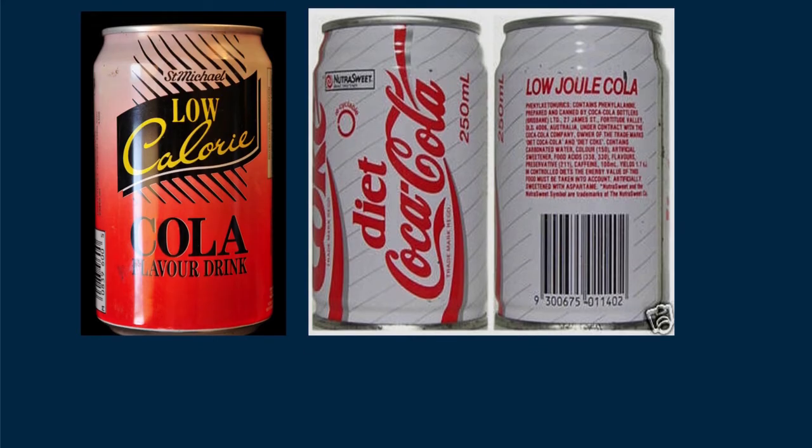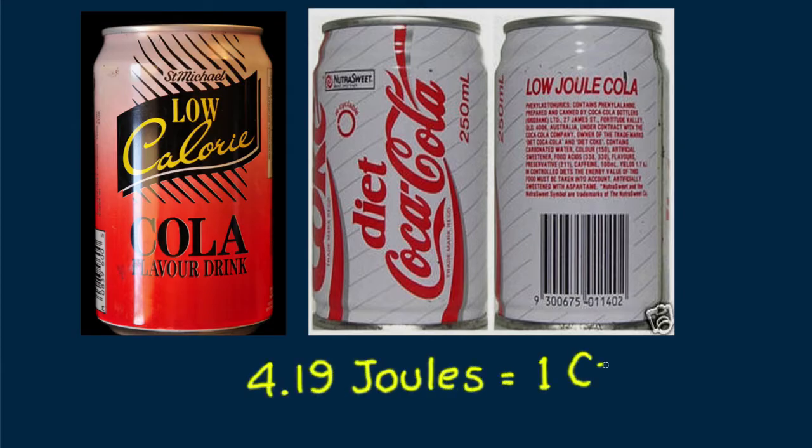One calorie is the amount of heat required to raise one gram of water by one degree Celsius. There are 4.19 joules in one calorie, so a calorie is larger than a joule.